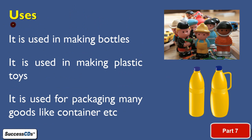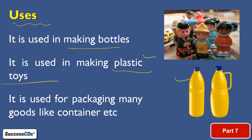Where are thermosetting plastics used? They are used in making bottles. You can make plastic toys from thermosetting plastics — meaning you cannot change the shape of those toys. Moreover, they are used for packaging many goods like containers. All these things are made from thermosetting plastics — once the shape is assigned, you cannot reshape it again.